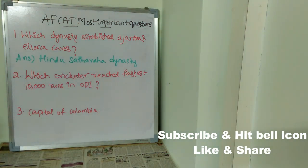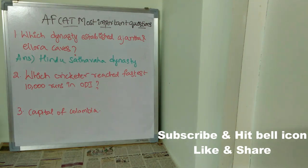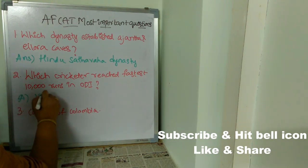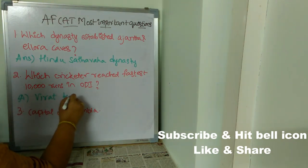The next question is: which cricketer reached the fastest 10,000 runs in ODI? The answer is Virat Kohli.